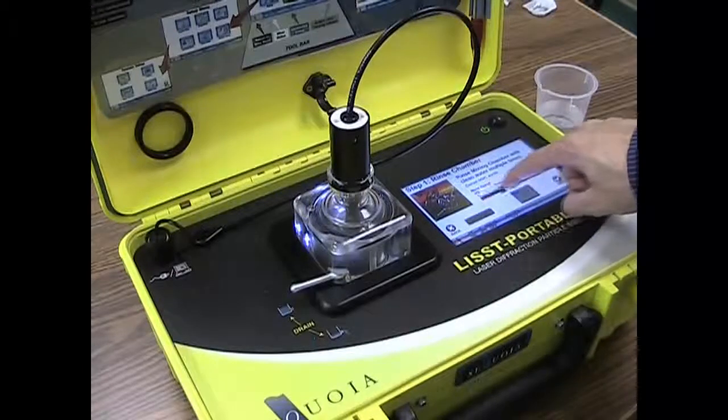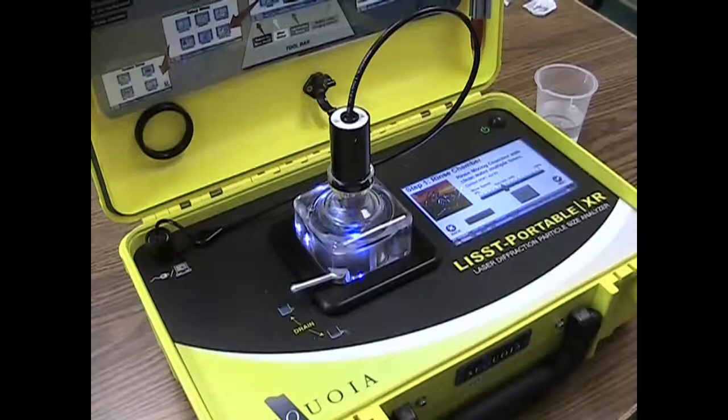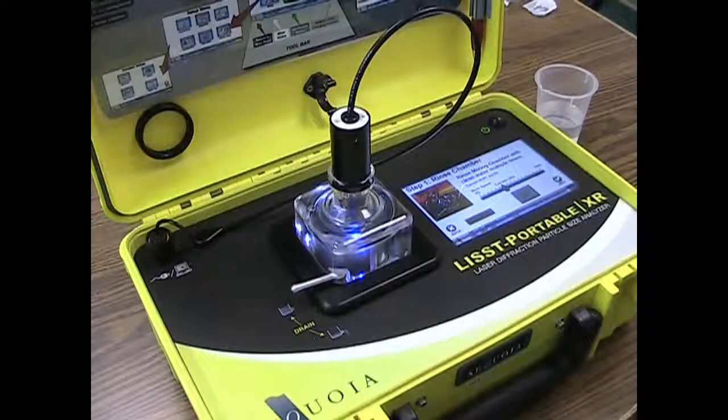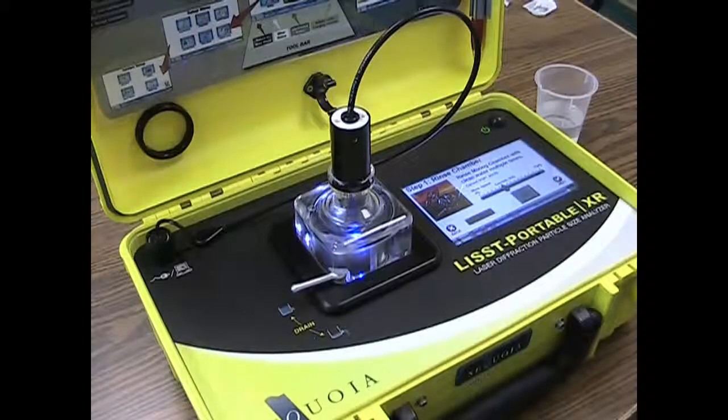Here is an example showing the chamber when it is filled incorrectly. When there is air at the top of the sample chamber, the mixing pump cannot be operated without introducing bubbles to the sample. This will lead to incorrect measurements of the particle size distribution.